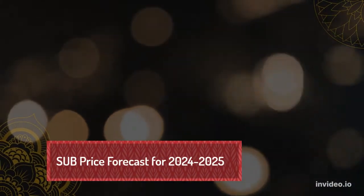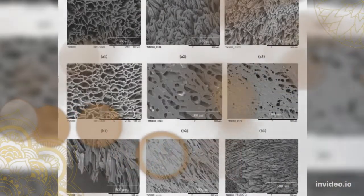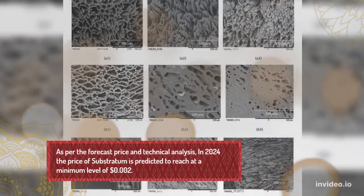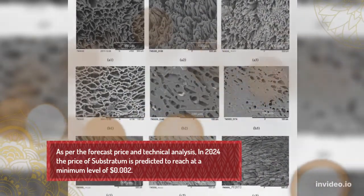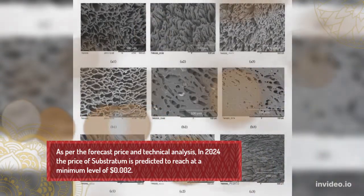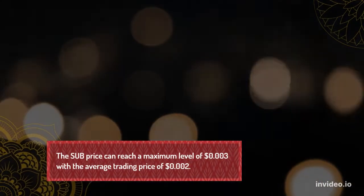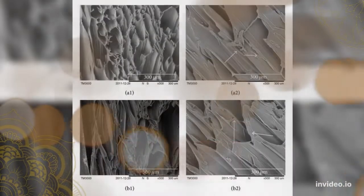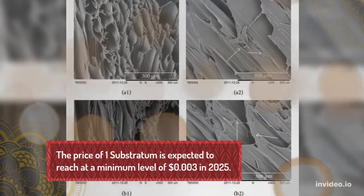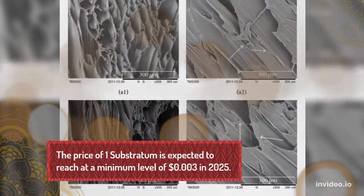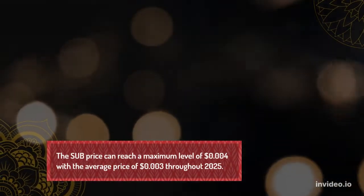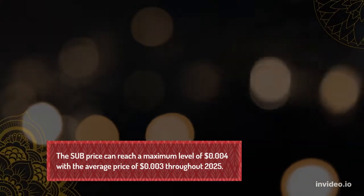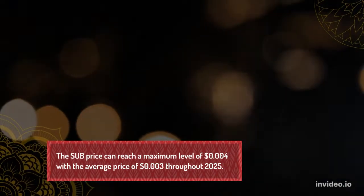Sub-Stratum Price Forecast for 2024 to 2025. As per the forecast price and technical analysis, in 2024 the price of Sub-Stratum is predicted to reach a minimum level of $0.002. The Sub price can reach a maximum level of $0.003 with an average trading price of $0.002. The price of one Sub-Stratum is expected to reach a minimum level of $0.003 in 2025, with a maximum level of $0.004 and an average price of $0.003 throughout 2025.